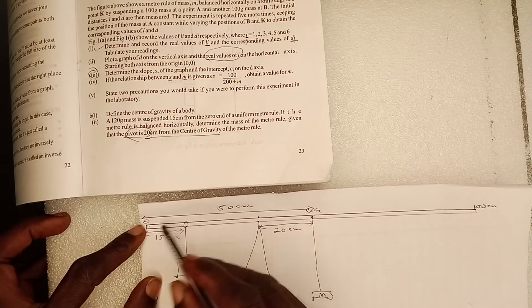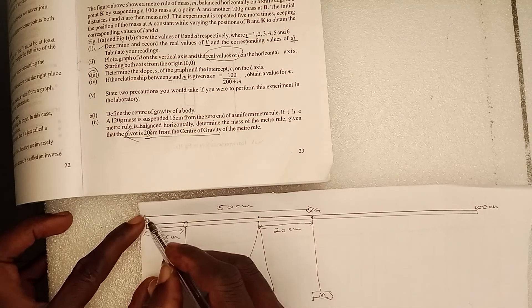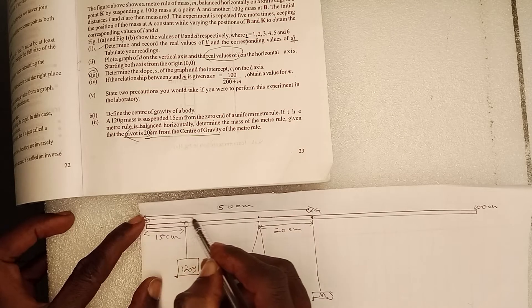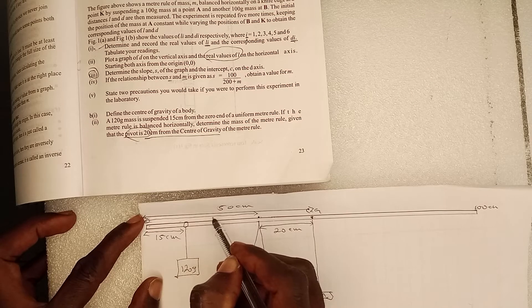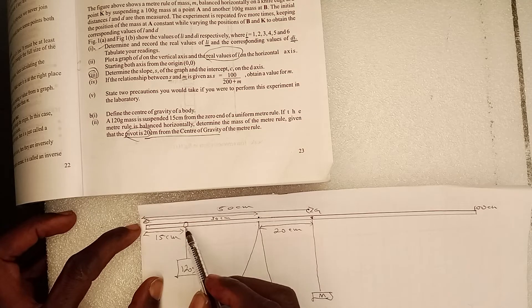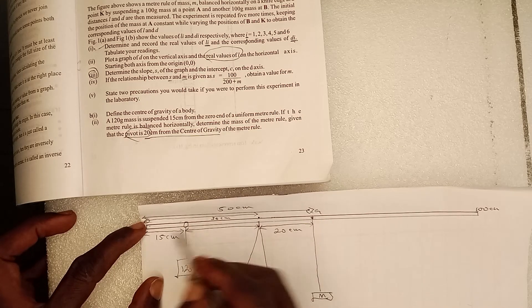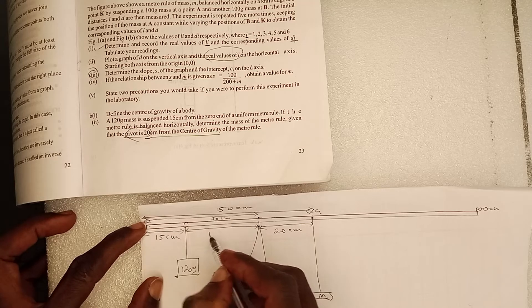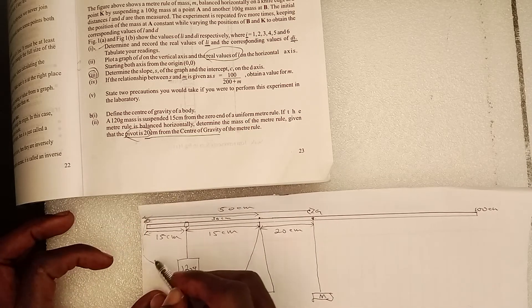Good. So from here to here is 30 cm. Let's label it correctly. From here to this point is 30 cm. But then, from here to here is simply 30 minus 15, and here is our 15 cm. So from the principle of moments...